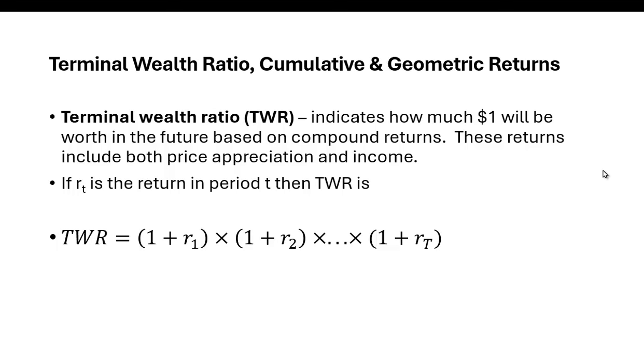If we define r sub t as the return in period t, then the terminal wealth ratio is equal to (1 + r₁) times (1 + r₂) all the way out to (1 + rₜ).